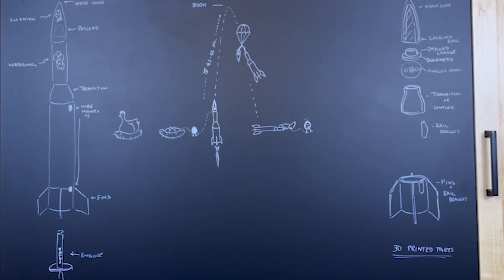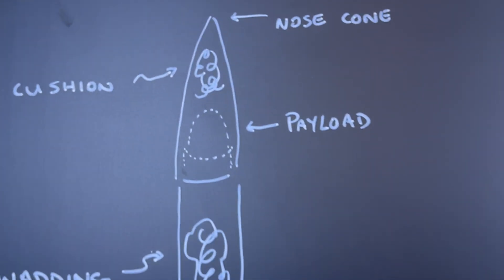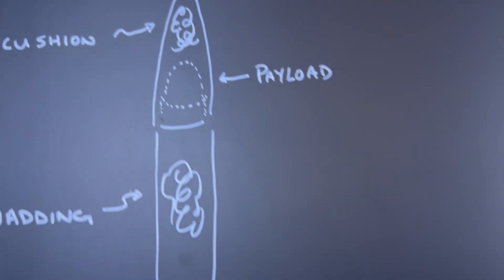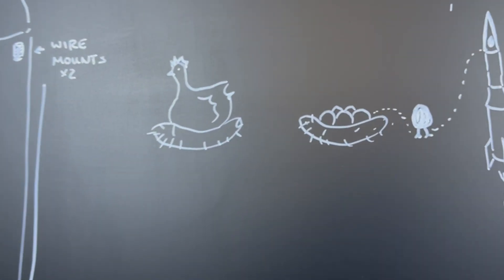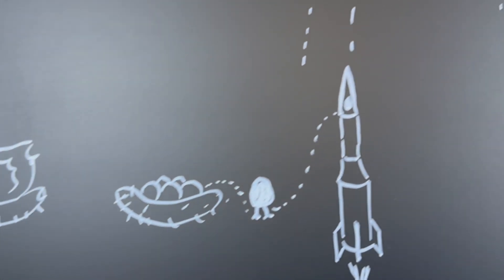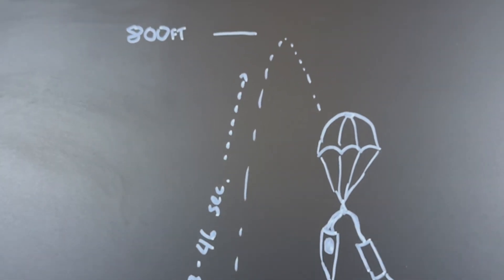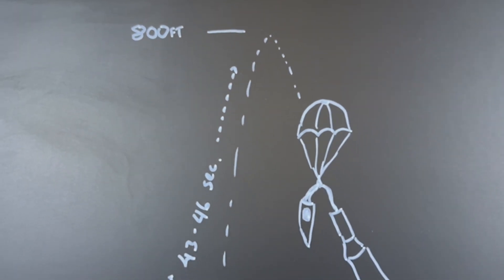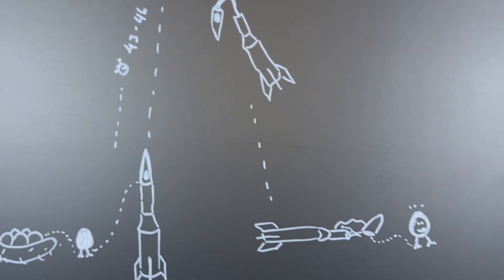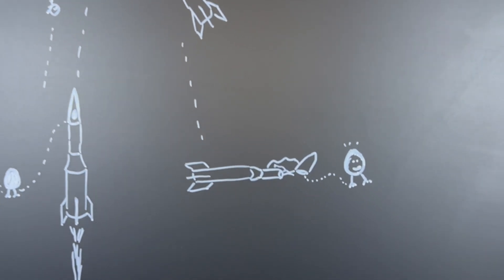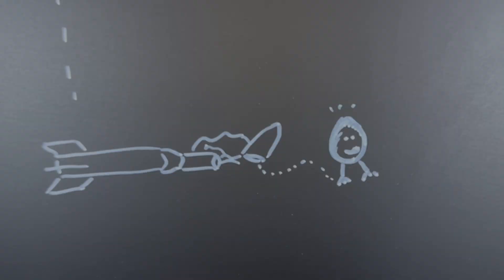During our first session, Tanish told us that this year's mission is to build a model rocket that carries one large chicken egg to an altitude of 800 feet, stays airborne for between 43 and 46 seconds, and returns the rocket to the ground safely with an unbroken egg.